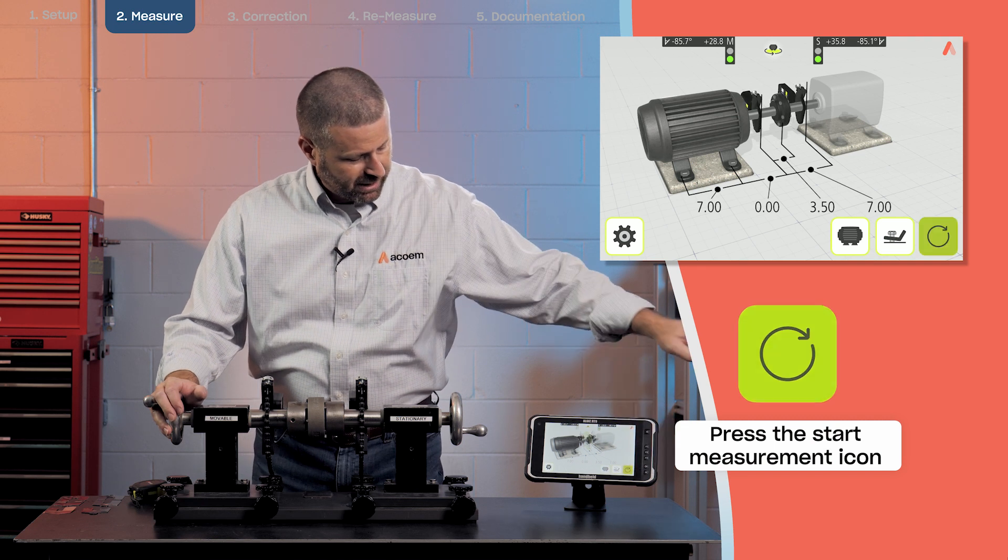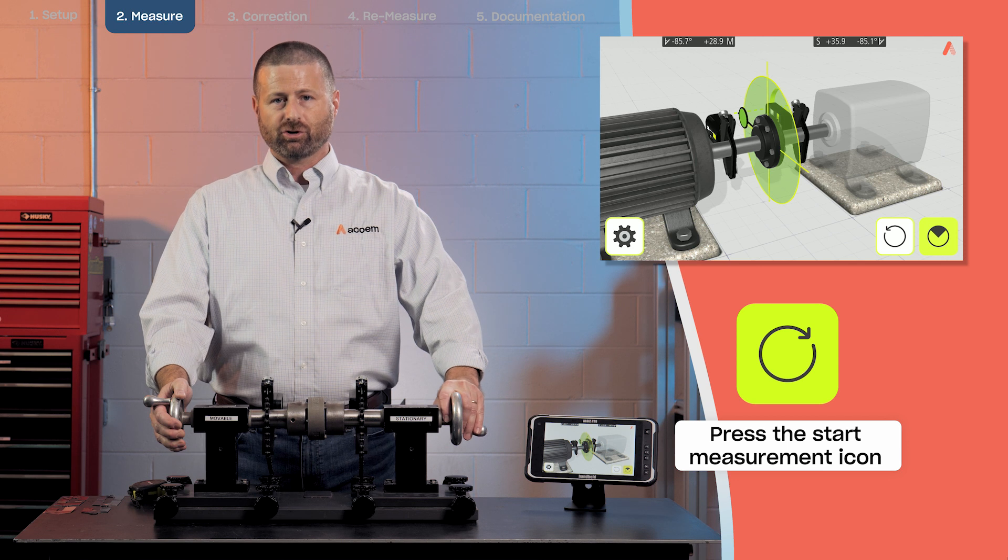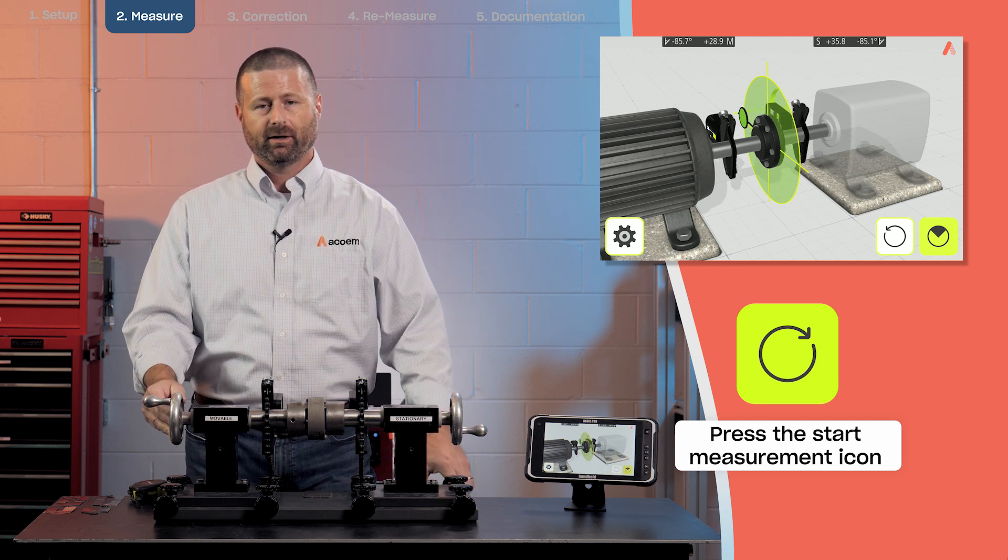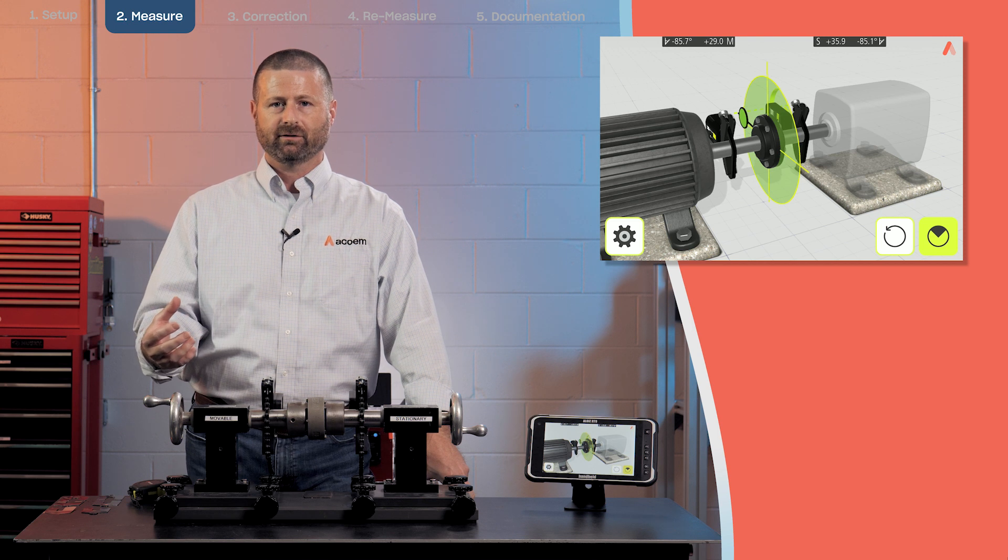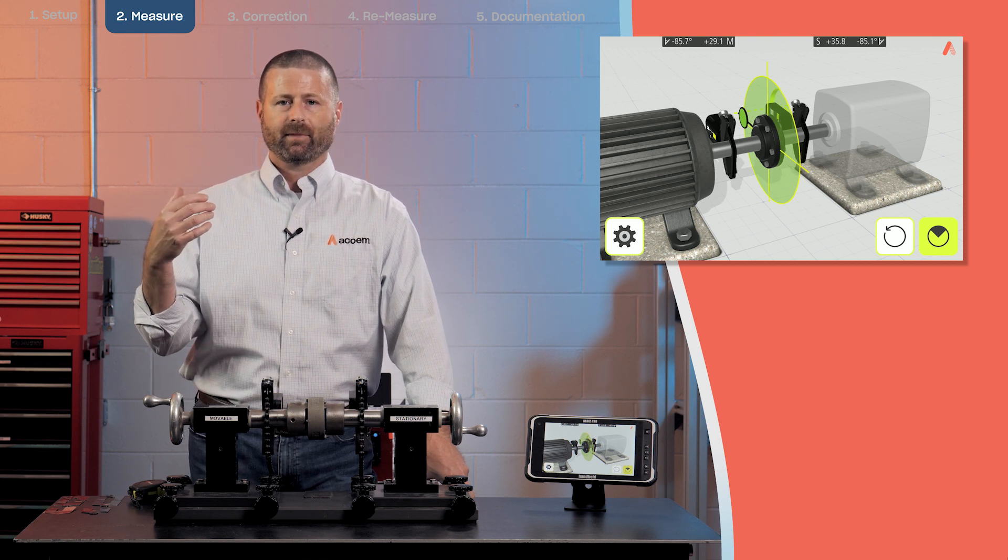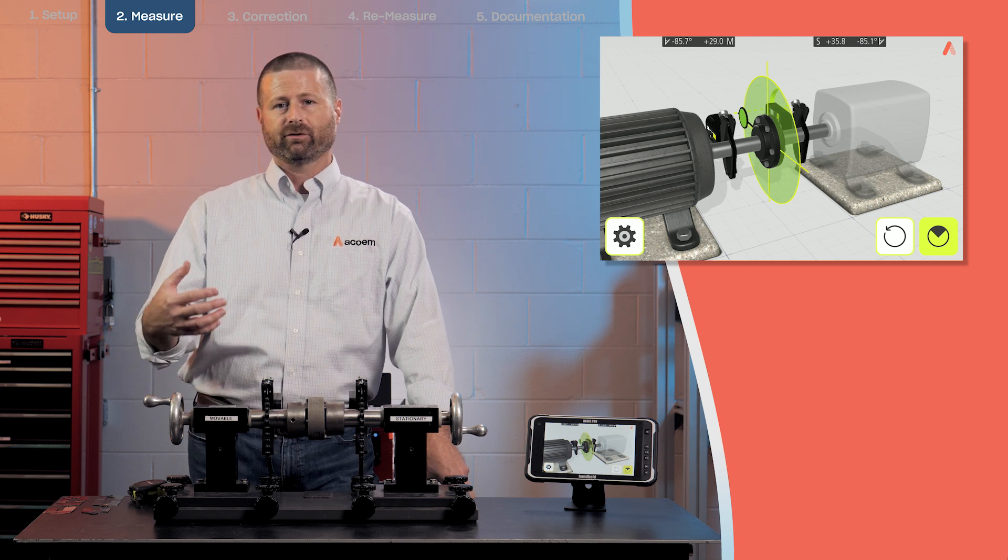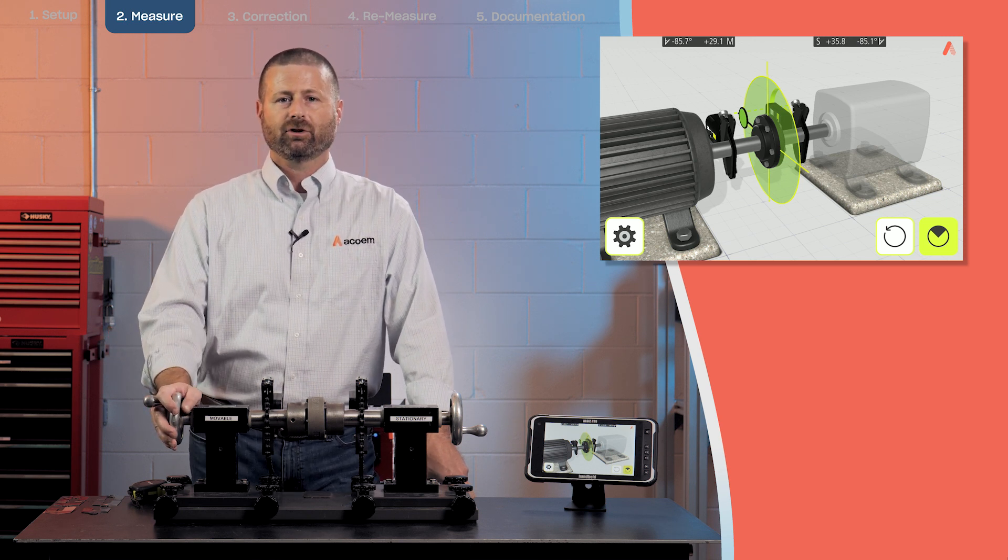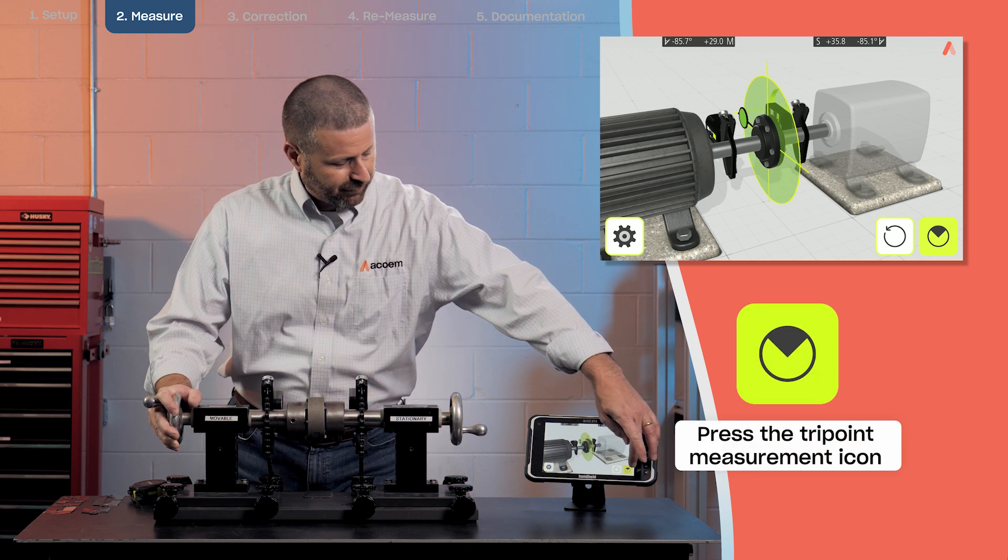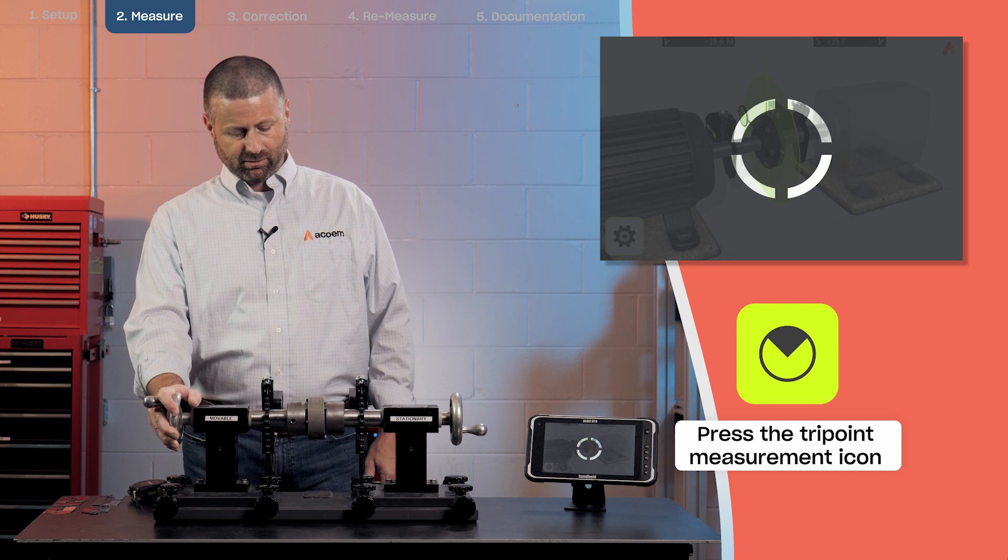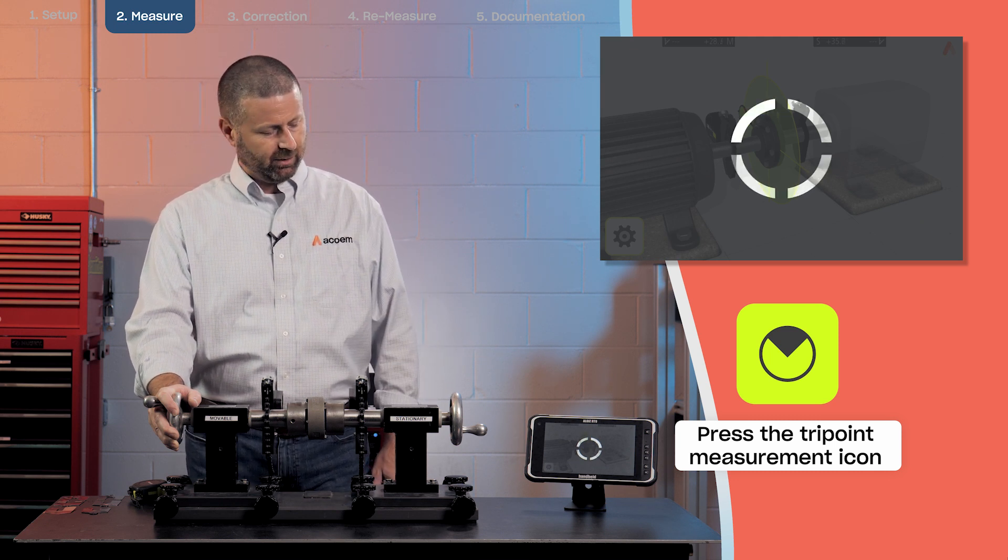I will hit the measurement icon and in AT100 we use our tri-point measurement method. In tri-point it requires us to take three measurements and the measurements can start anywhere and stop anywhere. In other words there's no requirement to use clock positions in tri-point. So I'll take my first measurement at this location which is somewhere between nine o'clock and 12 o'clock.